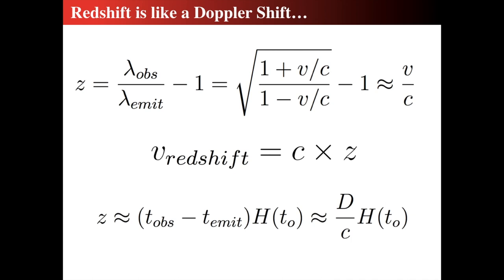The redshift is approximately related to the time that we observe it in the age of the universe compared to the time the light was emitted, times the current Hubble parameter H₀. That means the redshift equals the distance divided by the speed of light times H₀. T_now is today's time; T_emit is when the light was emitted from that galaxy. When we say a galaxy is 100 million light-years away, T_emit is 100 million years ago and T_observed is now, giving a large redshift.